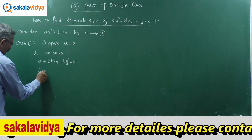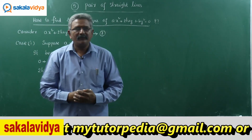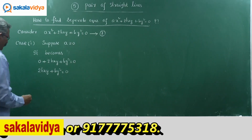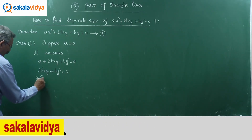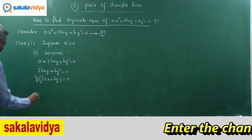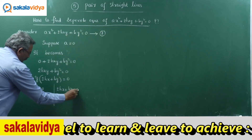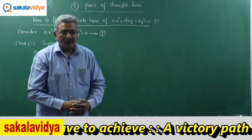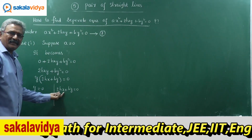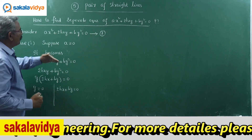We have 2hxy + by² = 0. The left-hand side can be factorized easily. We take y as common, giving y(2hx + by) = 0. So now we get two equations: y = 0 and 2hx + by = 0. These two represent straight lines. y = 0 is the equation of the x-axis, and both pass through the origin. This is the case when a = 0.